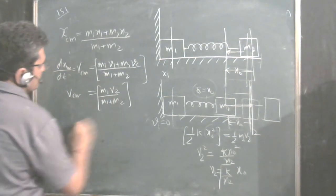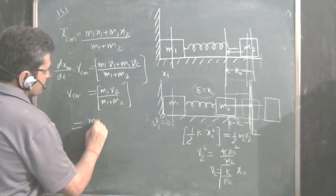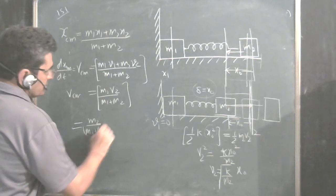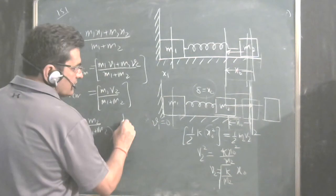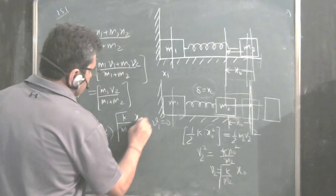What is the value of V2? V2 is, write first this M2, M1 plus M2. Now what is the value of V2? V2 is K upon M2 under root into X0.